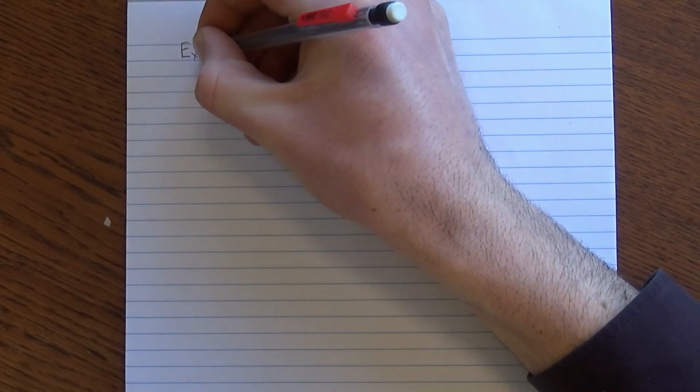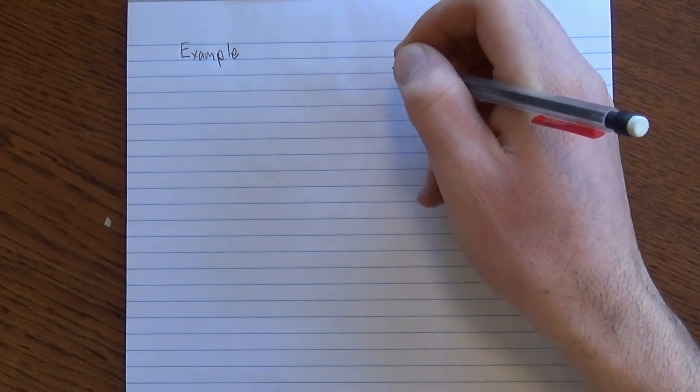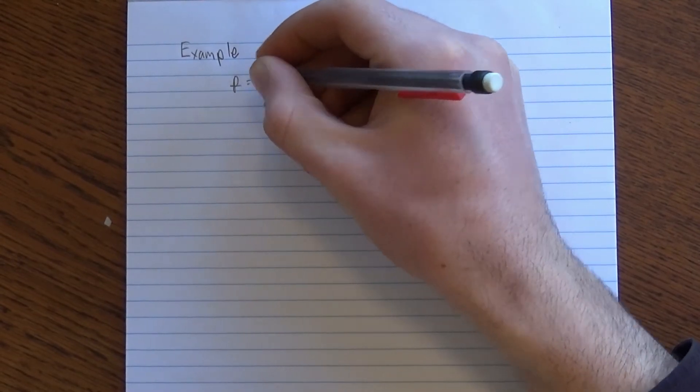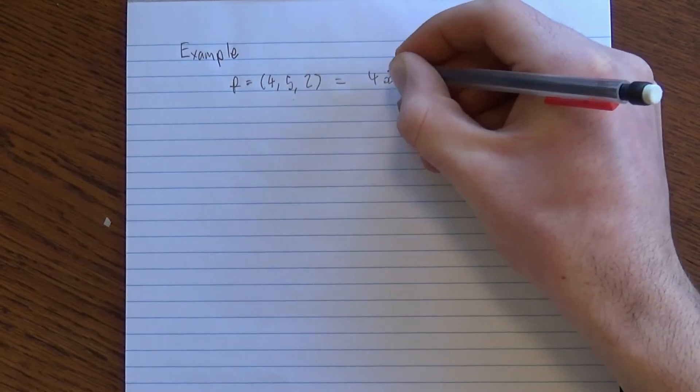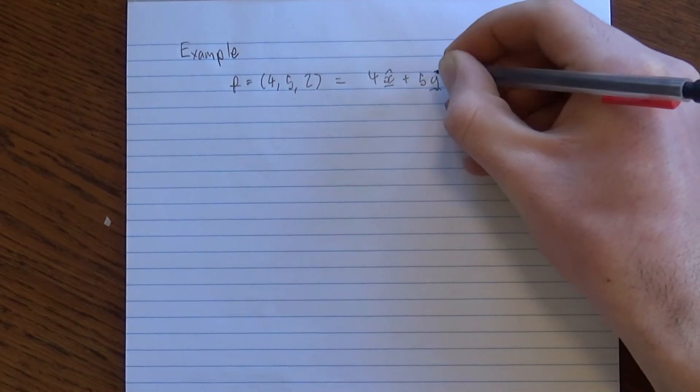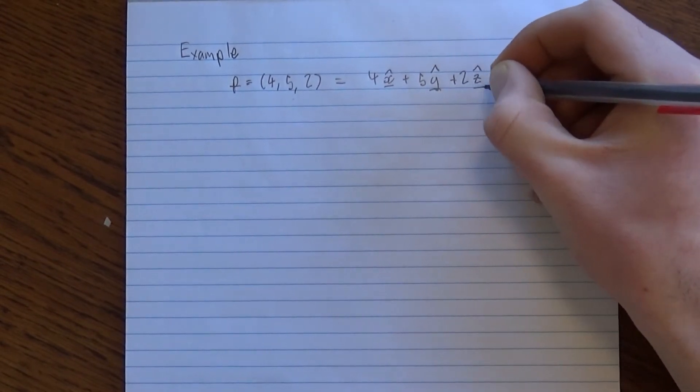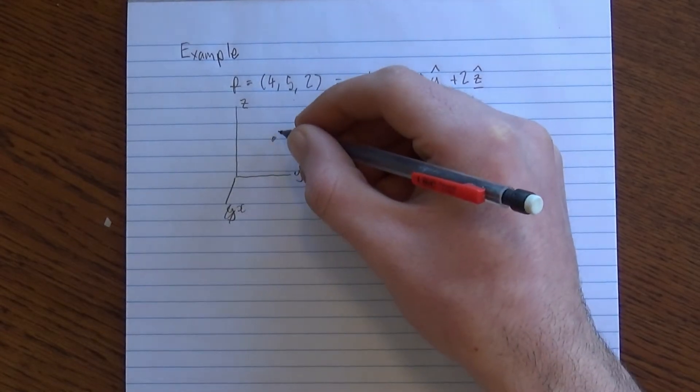Let's do an example. I have a vector, a position vector of point P in Cartesian coordinates given by 4, 5, 2. So, that's 4 in the x direction, 5 in the y direction, and 2 in the z direction. So, if we draw that out, we have some point P.